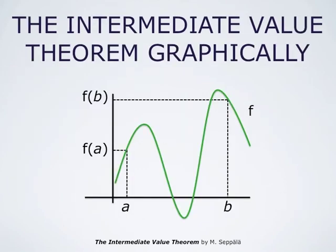Graphically, this means that if t is between f(a) and f(b), then there is a number c between a and b such that f(c) = t. In this case, there are three choices for the number c, and we have chosen the middle choice.